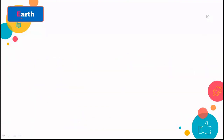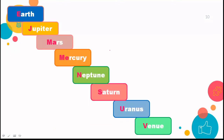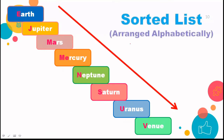In this way — Earth, then Jupiter, Mars, Mercury, Neptune, Saturn, Uranus and Venus — all are arranged in a sorted list in alphabetical order. This is how the linked list representation works.